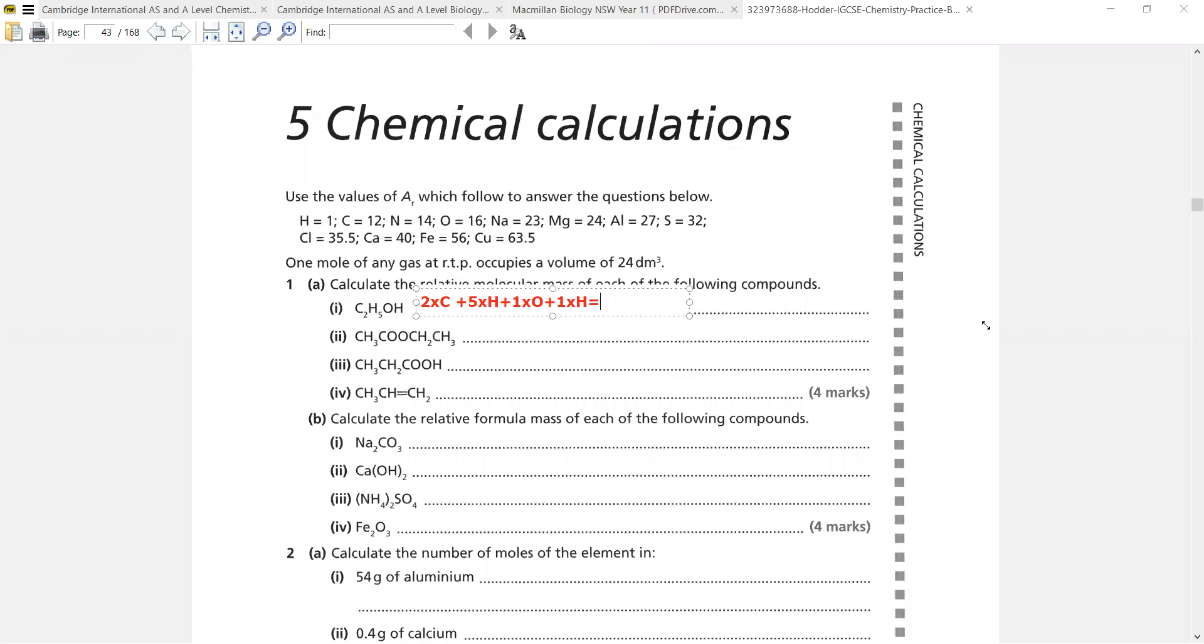When I show something on the board, whenever you do not understand, please tell me at that time. So I will be doing two multiplied by 12—12 is the atomic mass. Five multiplied by one, one is the atomic mass. Again, we have one multiplied by 16, then plus one multiplied by one. 24 plus five plus 16 plus one equals to how much? 46.